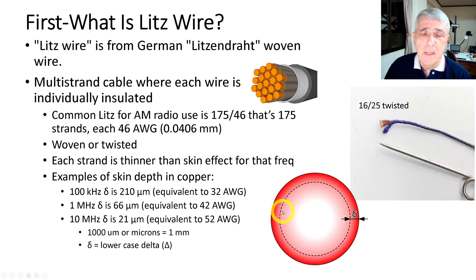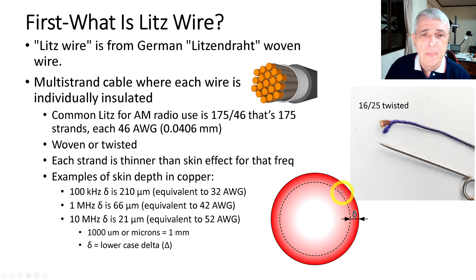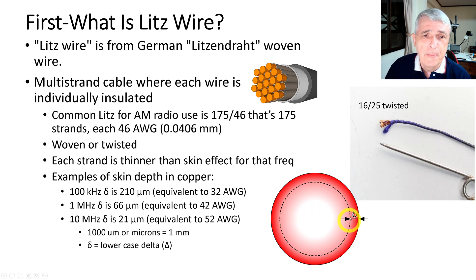As you shrink the wire, the skin depth gets closer and closer to the center. When the wire is tiny enough, all of the current flows through the whole conductor. With a large wire, the internal part is being wasted — there's not much current traveling through there, it's all on the outside. But as you shrink the wire down, the skin becomes most of the wire and it's much more efficient.